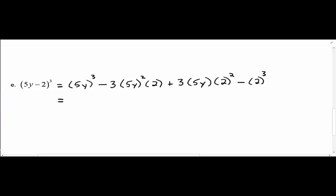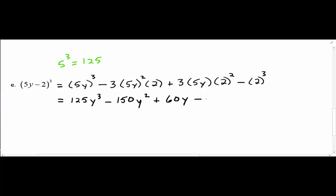Simplifying: 5³ = 125, giving 125y³. For the second term: 5² = 25, times 3 = 75, times 2 = 150, giving minus 150y². For the third term: 2² = 4, times 5 = 20, times 3 = 60, giving plus 60y. And 2³ = 8, giving minus 8. The final answer is 125y³ - 150y² + 60y - 8.